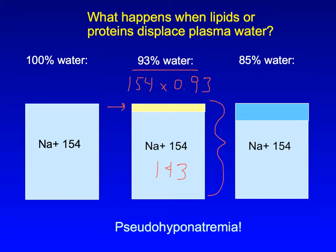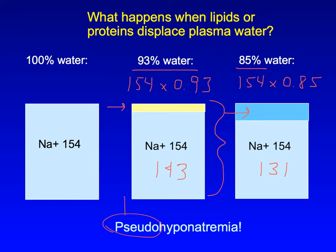And if there is an unusually large amount of lipids or proteins in the serum, they displace a volume of water even greater than 7% and the calculation is thrown even farther off. Here, with 15% non-water volume, the measured concentration of sodium is 154 times 85%, or 131 mEq per liter. And the person looks like they have hyponatremia, but they don't really.